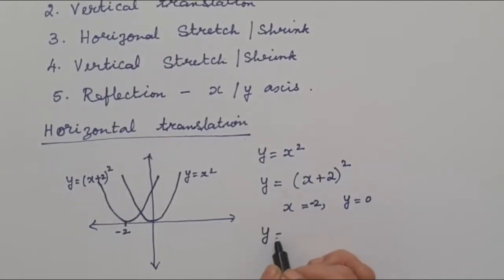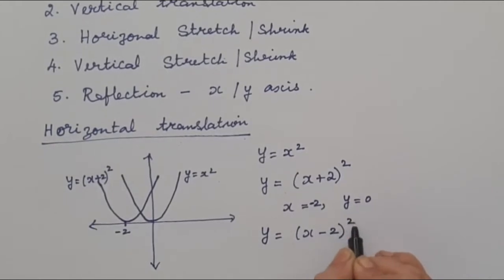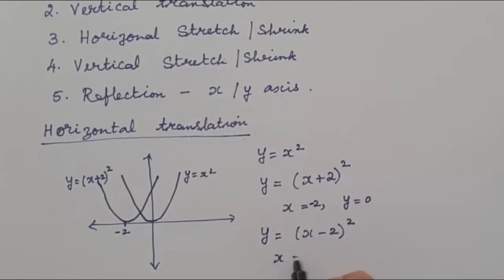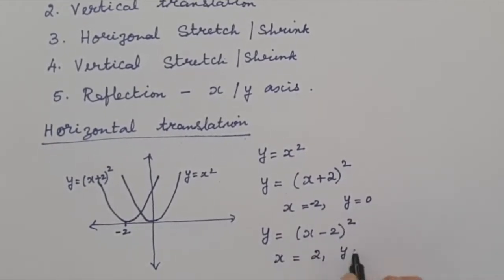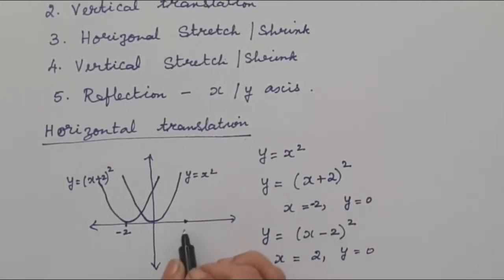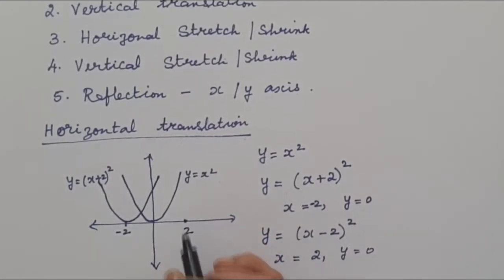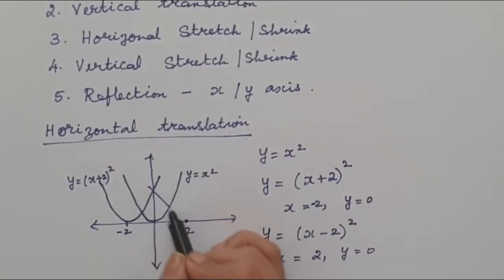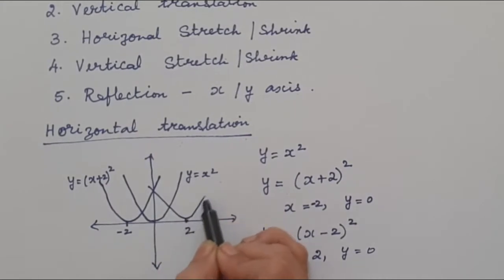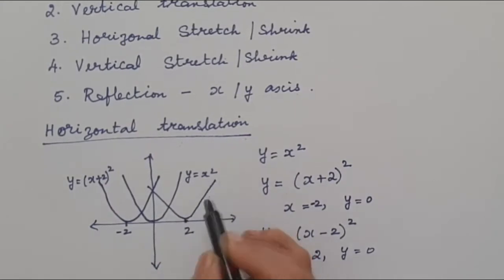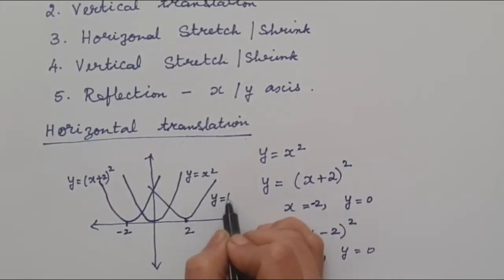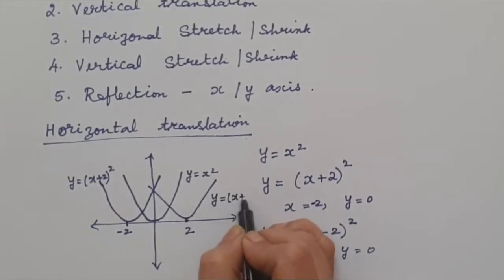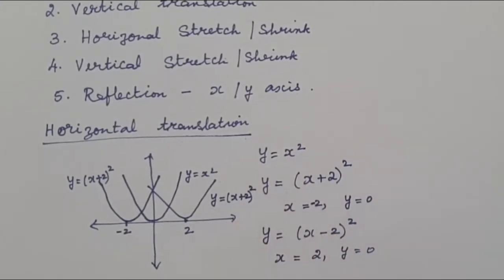When we have a graph of y = (x-2)², in that case when x = 2, y will be equal to 0. So our vertex becomes at x = 2. Our graph shifts to the right. This is the graph of y = (x-2)².